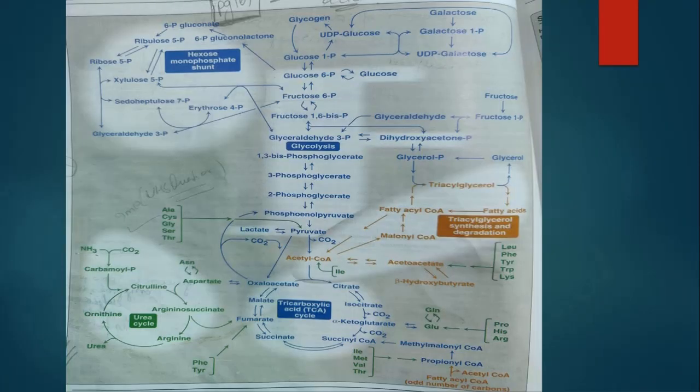To understand this, I would like you to go to the metabolic map. I have already told you that this metabolic map is very important for understanding different metabolic pathways — carbohydrate metabolism, protein metabolism, and lipid metabolism. This metabolic map is given on page 92 of Lippincott. If you look carefully, you will see three different colors: blue, brown, and green.